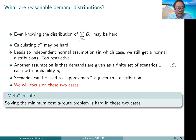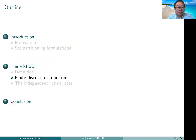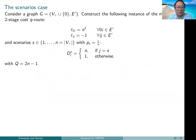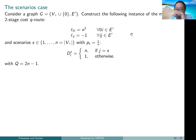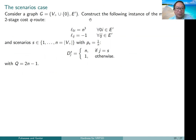The two cases I'll focus on are: the independent-normal assumption and the finite-scenario assumption. The main results show that with these two assumptions on demand distributions, what was a weakly NP-hard problem — solvable in pseudo-polynomial time — is no longer tractable. The computation of two-stage costs makes the problem transition to being much harder. This is not too surprising given what happens in stochastic programming generally when uncertainty is introduced.